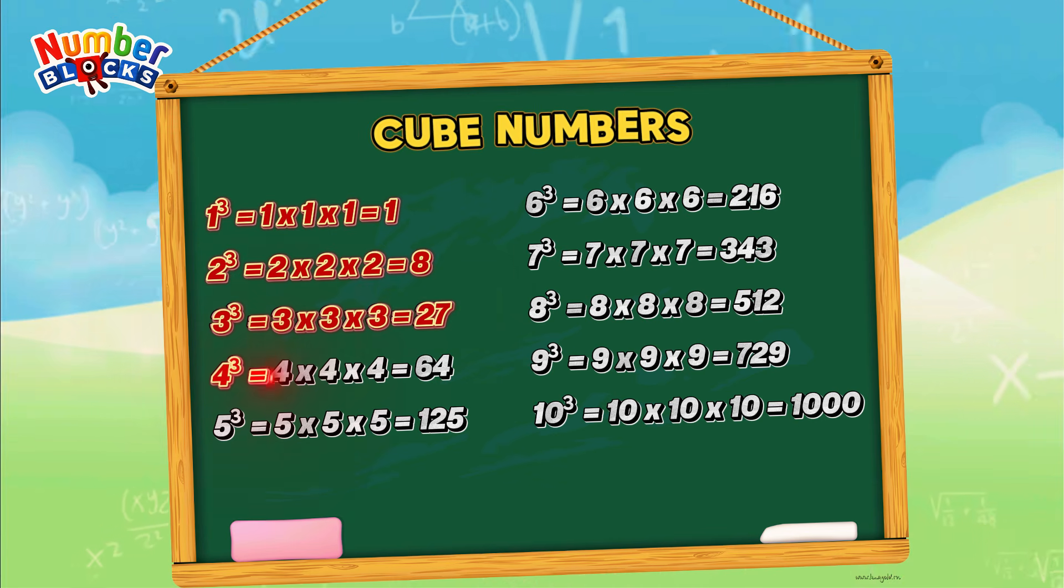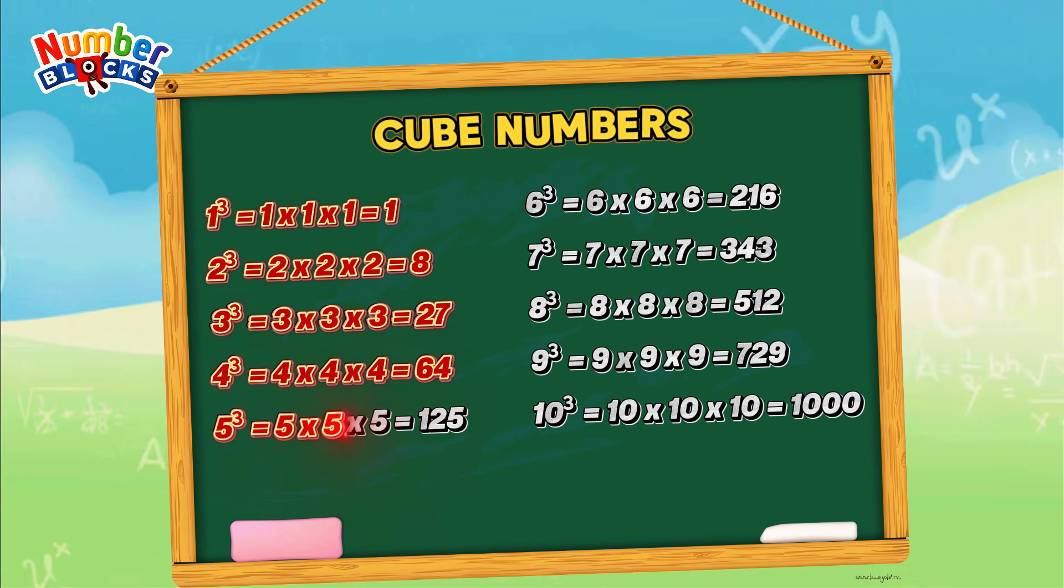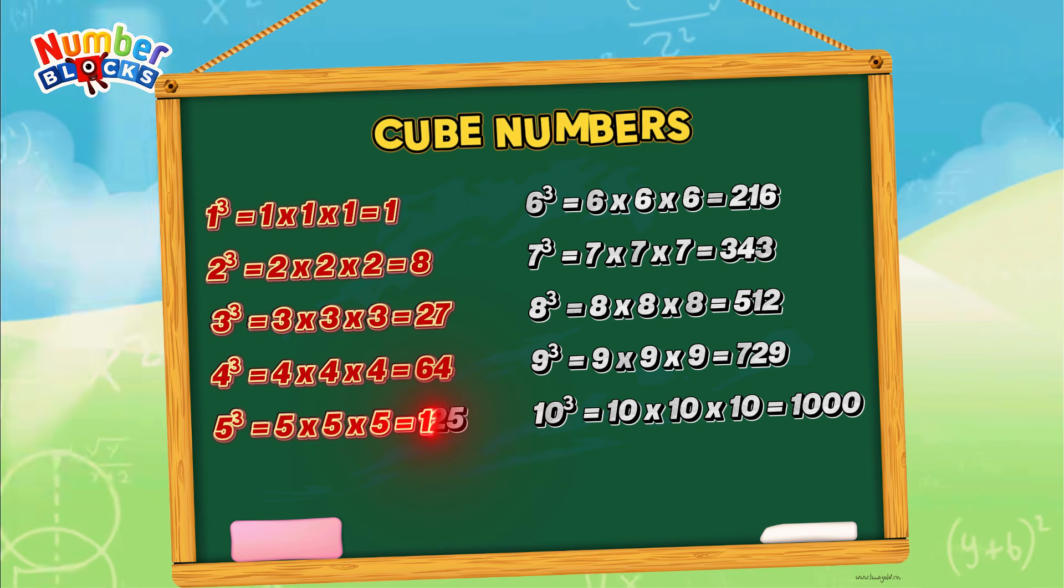4 cube, or 4 times 4 times 4, equals 64.